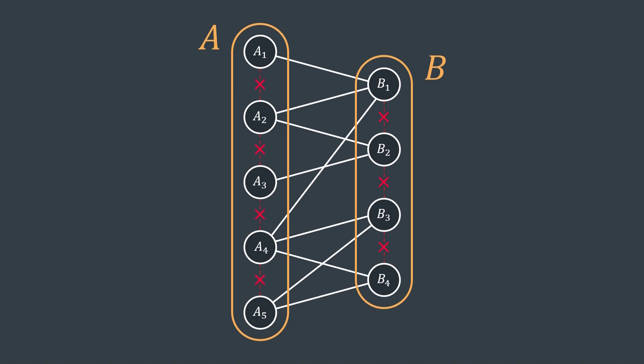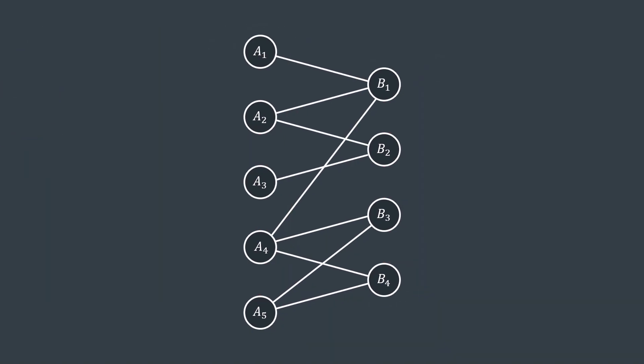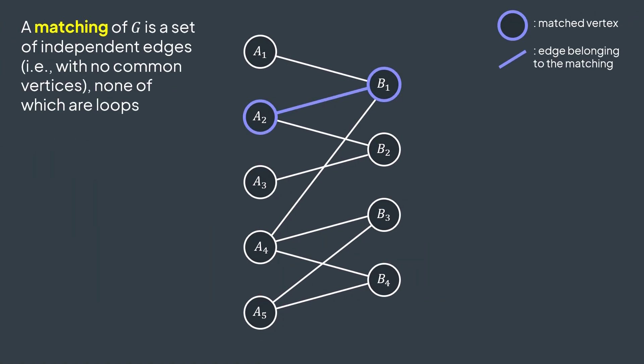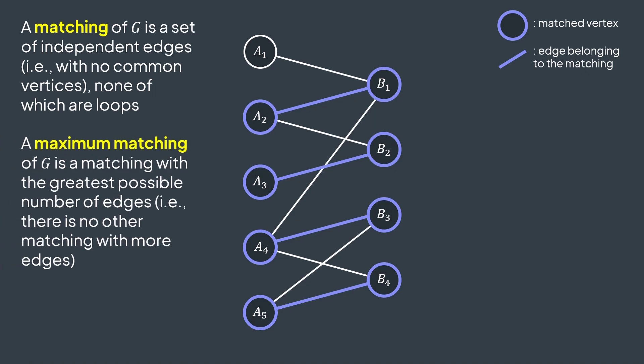Such a graph is said to be bipartite. Starting from this graph, we may want to match vertices by selecting independent edges so that each vertex is matched with another one at most once. We made a matching of three edges, but here we can have a matching of four edges but not more. Such a matching is said to be a maximum matching of G, a matching of G with the greatest possible size.